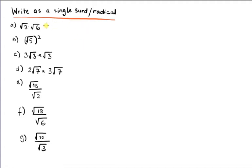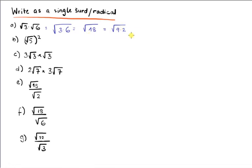Looking at some basic applications of radicals and surds, let's start with A: multiplying √3 times √6. Since they have the same root, I can multiply and pull them under one root, giving √(3×6) = √18. I can write 18 as √(9×2), and since 9 = 3², I have √(3²×2). Because I have a perfect square under a square root, I can pull it out and get 3√2.